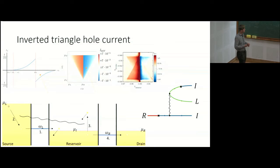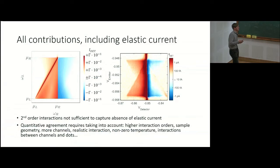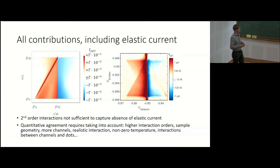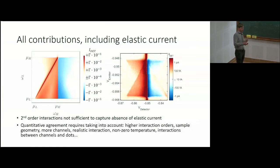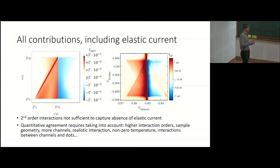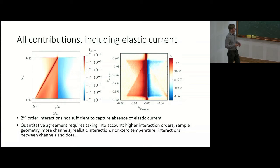On this slide I show all contributions including the elastic current combined. The drawback is that the absence of the elastic current so prominently seen in the experiment cannot be captured — this is outside our allowed parameter range. To get quantitative agreement between experiment and theory would require accounting for many other effects: higher interaction orders, sample geometry, more channels (since the relaxation in the regular triangles is most likely due to inter-channel relaxation), non-zero temperature, and interactions between channels and the dots to describe the Fermi-edge singularity described by Thomas. Quantitative agreement is out of reach.